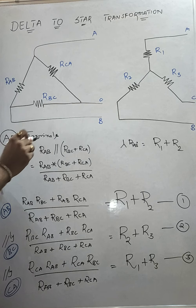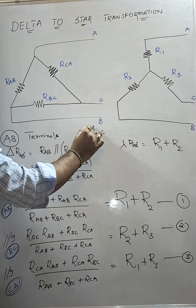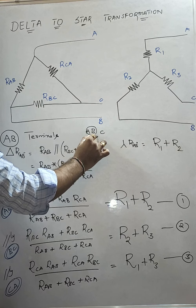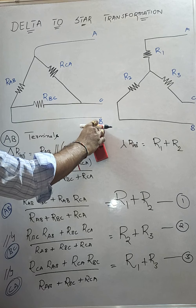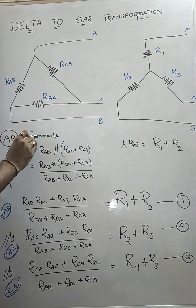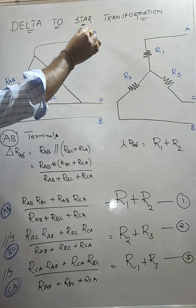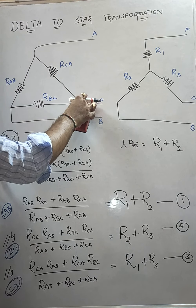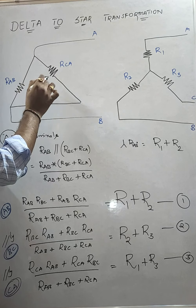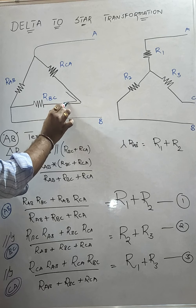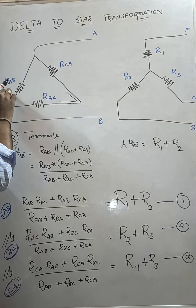In this derivation, consider we have terminals A, B, C. For each pair, for the first step, consider only A, B terminals. For the second step, consider B, C terminals. For the third step, consider C, A terminals. I would like to consider only A, B terminals. The delta-connected equivalent resistance across A, B terminals: R_AB is in parallel to the series combination of R_BC plus R_CA. When two resistors are connected in parallel, the equivalent value is R1 times R2 divided by R1 plus R2. So the equivalent across A, B is R_AB into (R_BC + R_CA) divided by their sum.